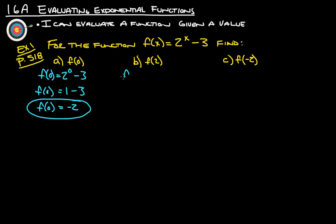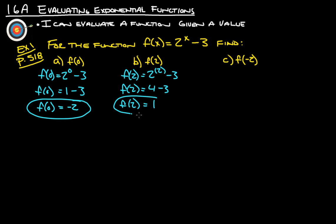Same thing here. f of 2 is 2 to the second minus 3. So 2 to the second is 4, minus 3, so f of 2 is simply 1.